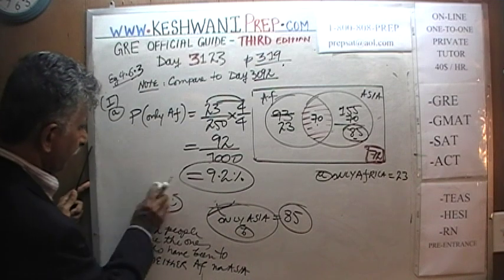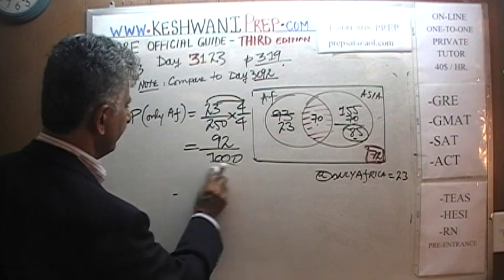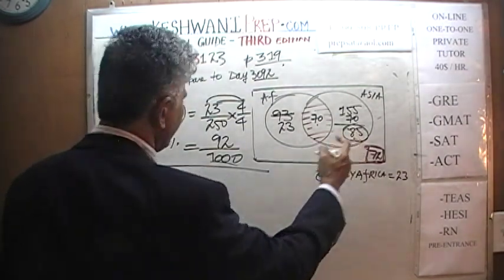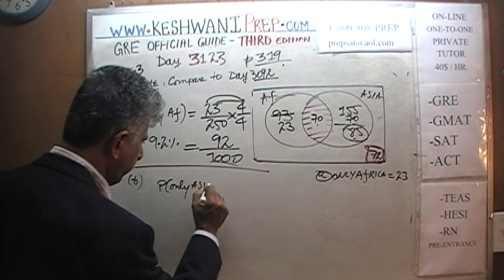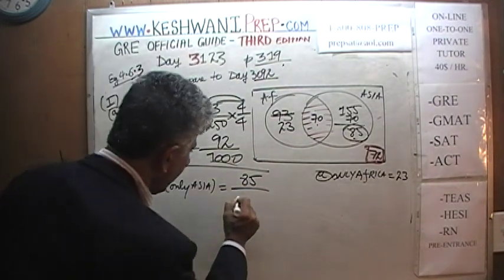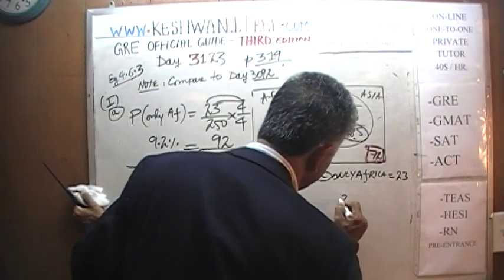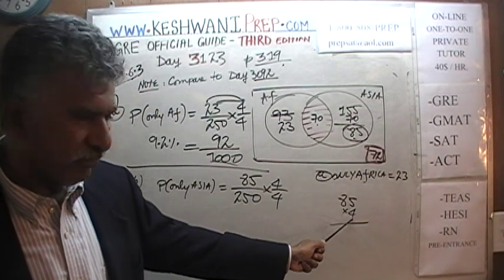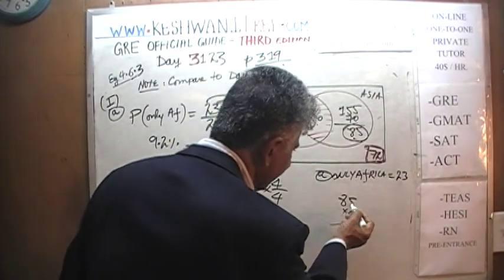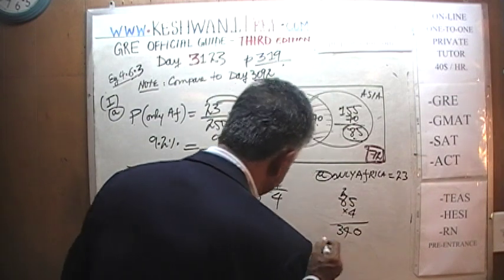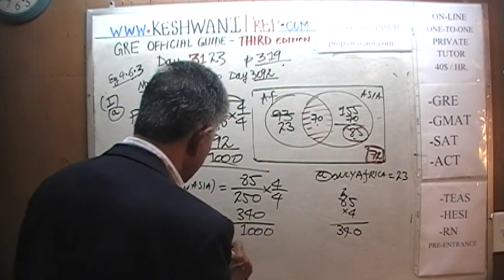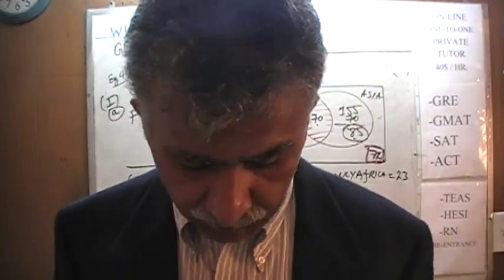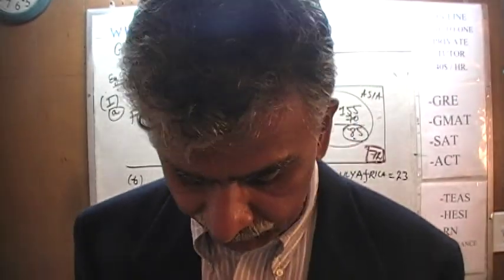Let's do part B. Part A was 9.2%. Part B: what are the odds of picking somebody who has been to only Asia? There are 85 such people out of 250. Multiply top and bottom by 4: 80 times 4 is 320, 5 times 4 is 20, so 320 plus 20 is 340. It's 340 out of 1000, which is 34% exactly. There is a 34% chance that a randomly picked person has been to only Asia.